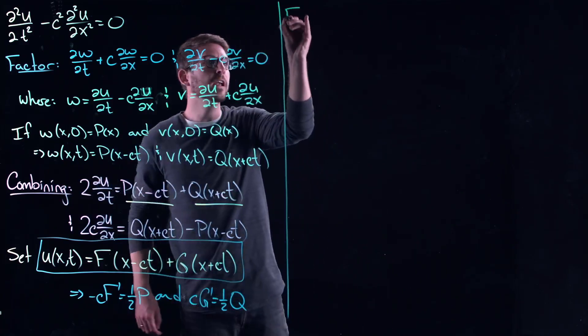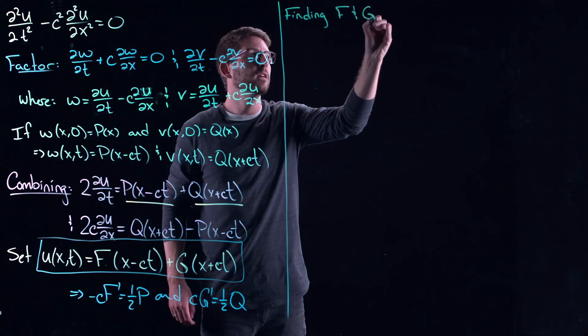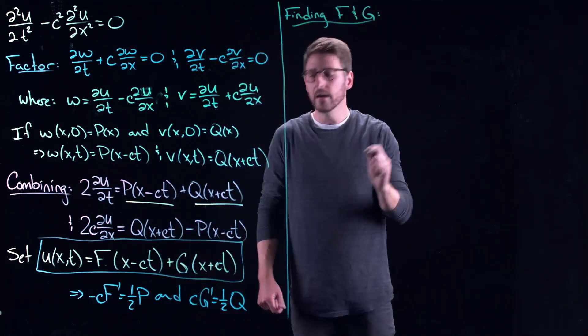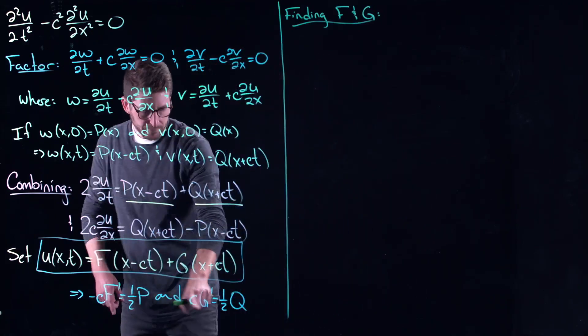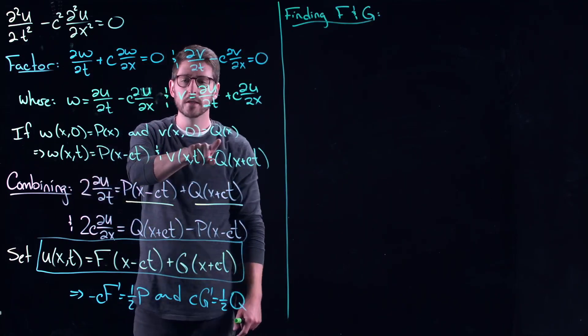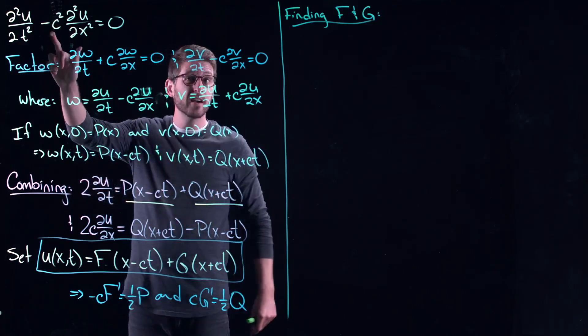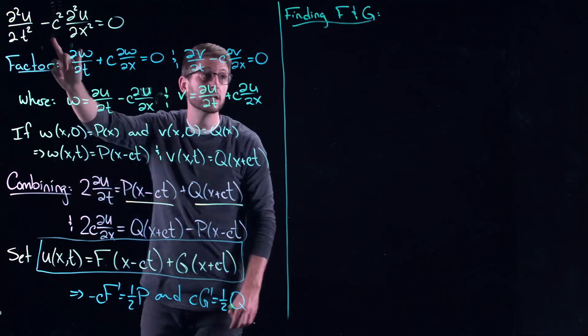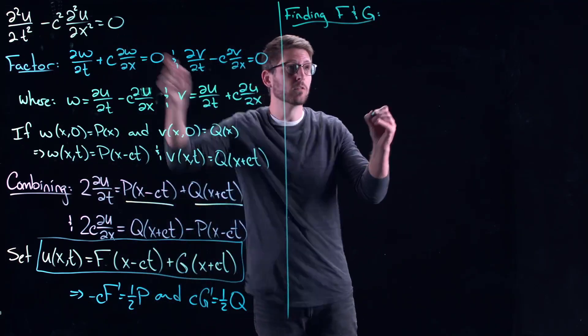So what can we get? We could say finding F and G. Well, if we have initial conditions, right? Because look, you could get F and G just by knowing P and Q, but we don't really know what P and Q are. We just said, imagine we have initial profiles. That's not how we have the wave equation. The wave equation is given to us with initial conditions on U, right?